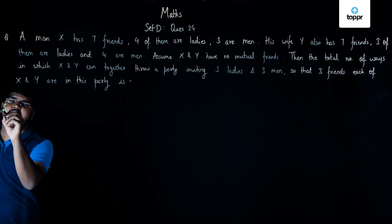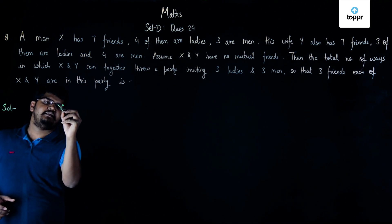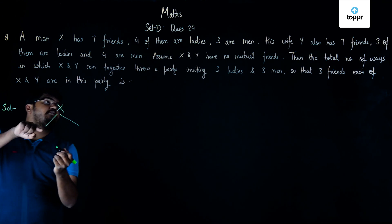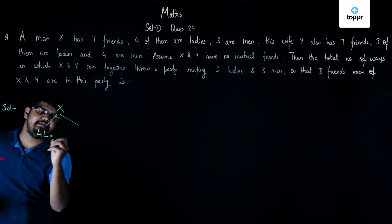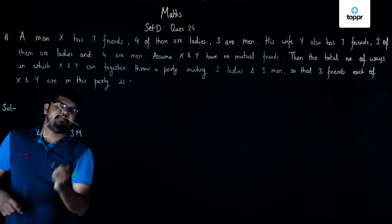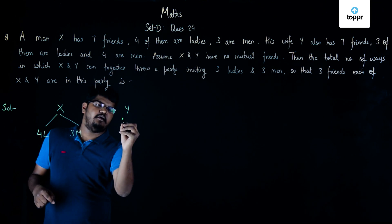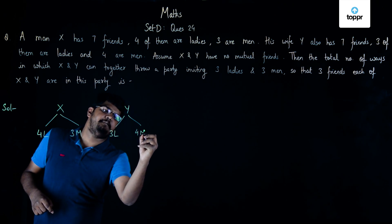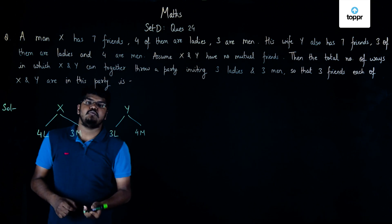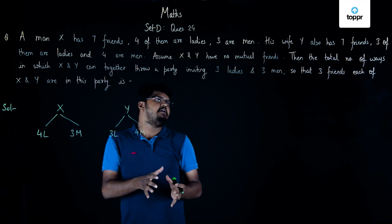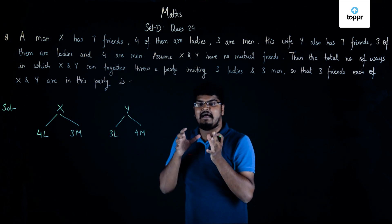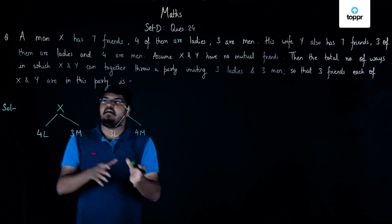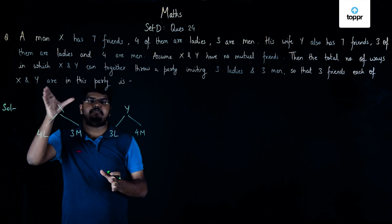So in this question, we have a guy X who has seven friends — four ladies and three men — and a woman Y who also has seven friends — three ladies and four men. We have to throw a party of six people: three ladies and three men, where three friends each from X and Y are invited.